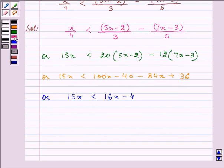Subtracting 16x from both the sides we have 15x minus 16x is less than 16x minus 4 minus 16x. After simplification we have minus x is less than minus 4.